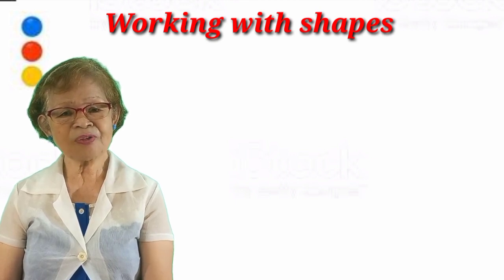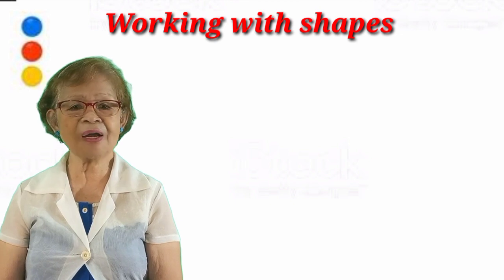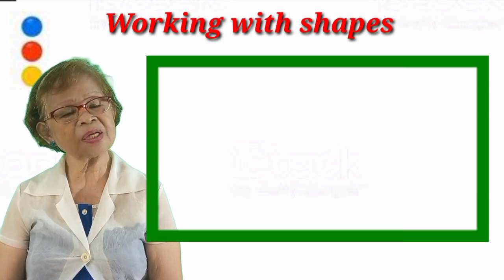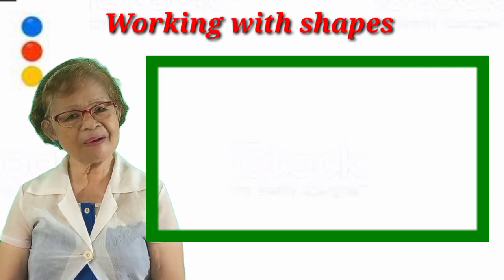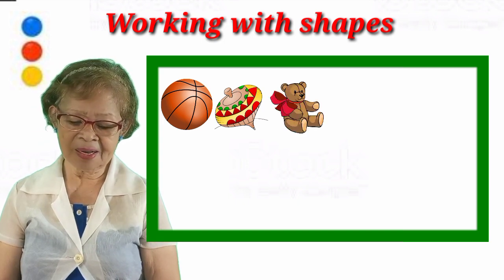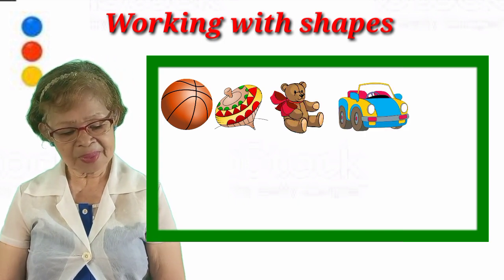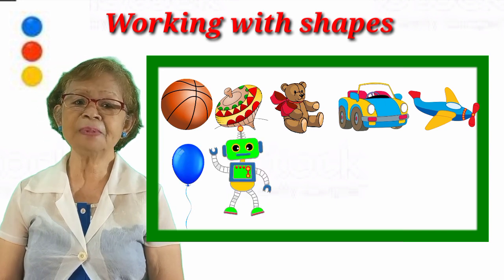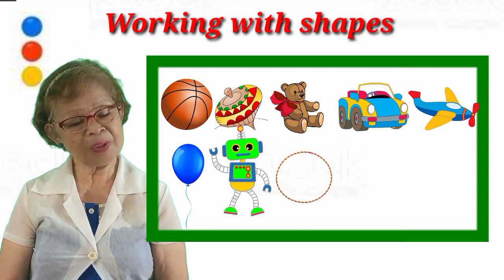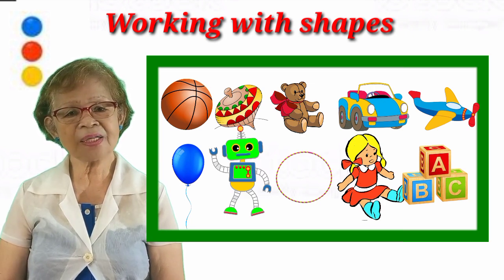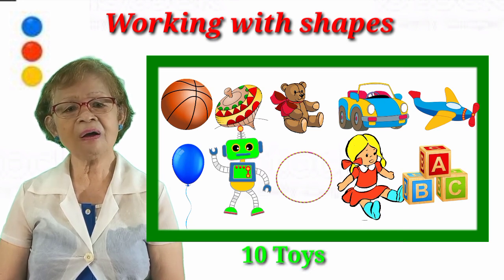Here again, class. We are going to finish our working with shapes. We are going to make a rectangle, and we are going to fill it with different toys. So first we put the ball, the top, the teddy bear, the small toy car, the toy plane, the balloon, the robot, the hula hoop, a toy, and a boat. Let's count them all: one, two, three, four, five, six, seven, eight, nine, ten. They are all toys — they fill the rectangle.